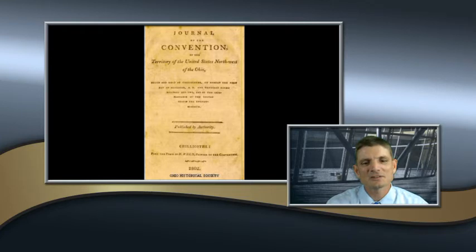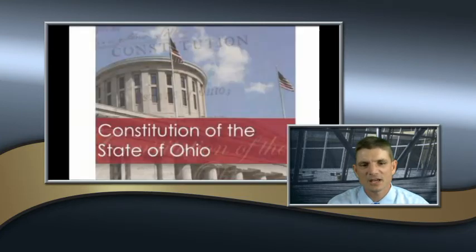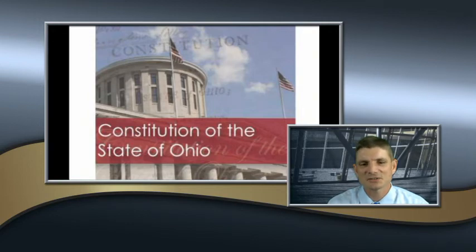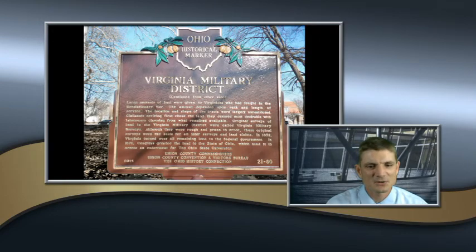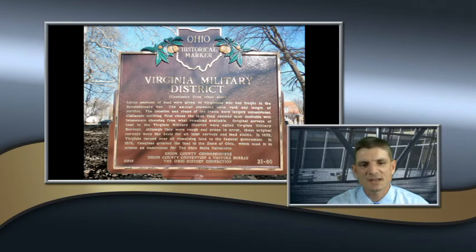Political leaders in Ohio wrote Ohio's first constitution so Ohio could become a state. Ohio's constitution was modeled after the U.S. Constitution. Some land from the Northwest Territory was granted to Revolutionary War veterans as compensation for their service.